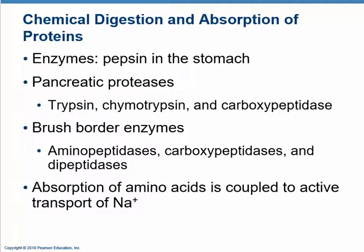For proteins, the major enzymes start with pepsin in the stomach. Pepsinogen becomes activated to pepsin, and pepsin breaks the peptide bonds of the proteins so that proteins become polypeptides. The pancreatic proteases break these large polypeptides into smaller polypeptides. Then the brush border enzymes, which are peptidases, break dipeptides and other fragments down into small units — either dipeptides or amino acids — that can be absorbed, again via secondary active transport.